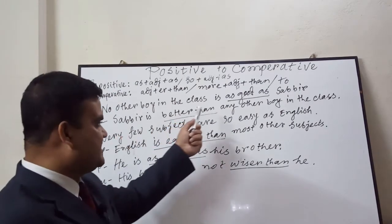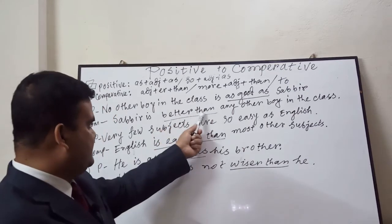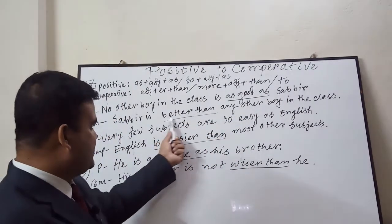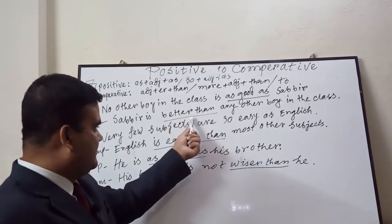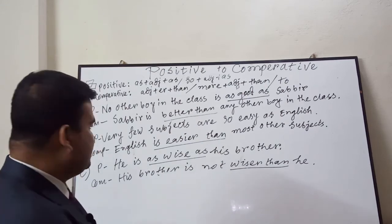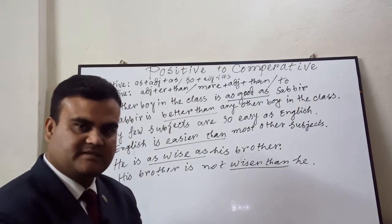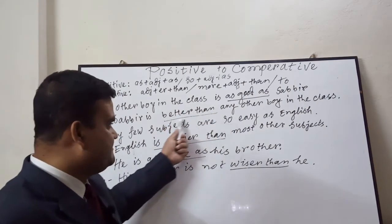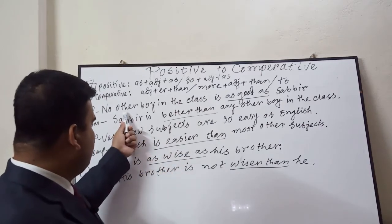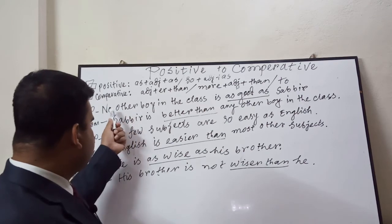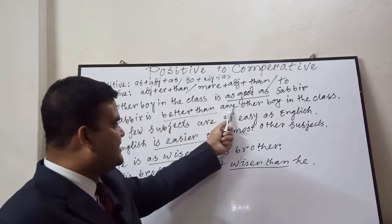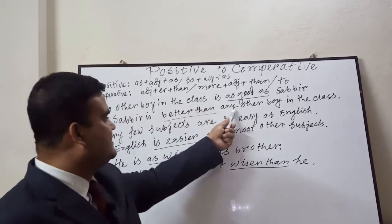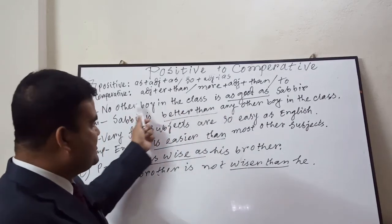If we go through the first rule: in positive, if the sentence starts with 'no other' — for example, 'No other boy in the class is as good as Subbead' — we confirm the sentence is in positive form. When changing from positive to comparative degree, the object in positive form is to be placed at the position of subject in comparative form. And 'no other' is transformed into 'any other' from positive to comparative. So: 'Subbead is better than any other boy in the class'.